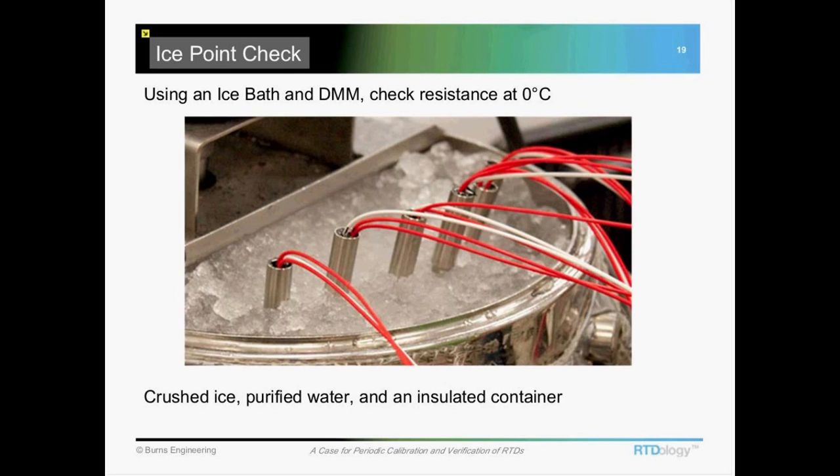You want to insert the probes into the ice and don't take the probe and try to beat a hole in the ice. Take another stick or a rod or an old probe or something that you don't care about. Poke the holes in the crushed ice that way, then stick the probes in there. Insert them far enough so that you have at least three and a half or four inches of immersion for a quarter inch diameter sensor. You need to make sure that you have that efficient immersion just so that the ambient air conditions aren't affecting your measurement.